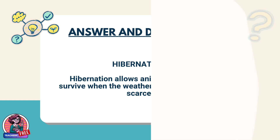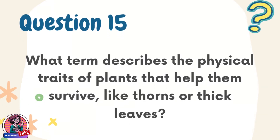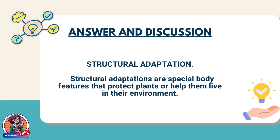Question 15. What term describes the physical traits of plants that help them survive, like thorns or thick leaves? Answer: Structural adaptation. Structural adaptations are special body features that protect plants or help them live in their environment.